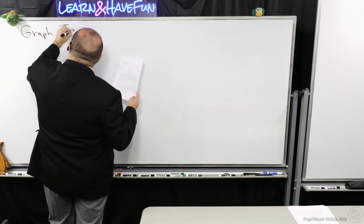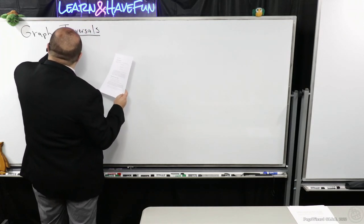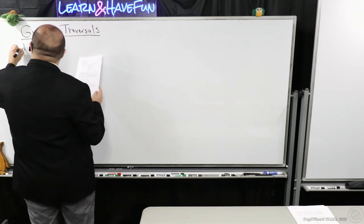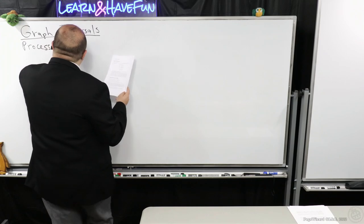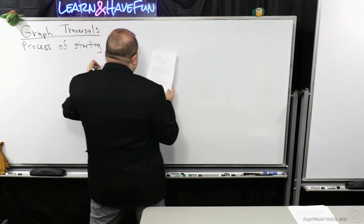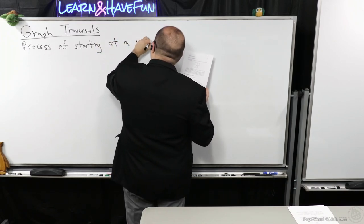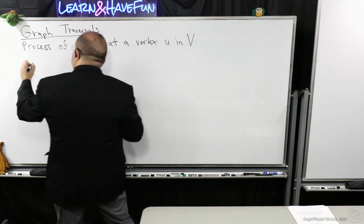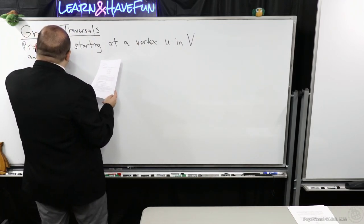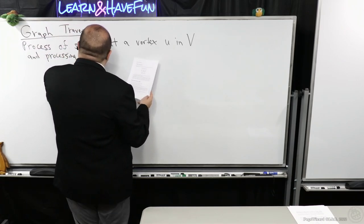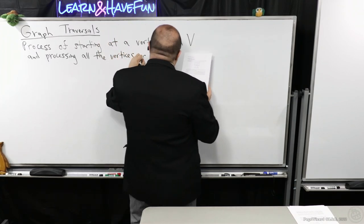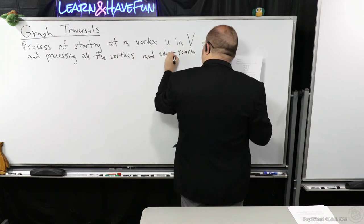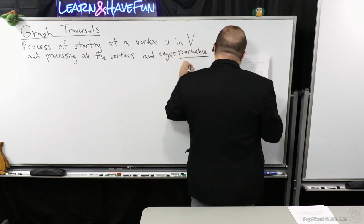So let's talk about what a graph traversal is. I'm going to keep it rather high level, keep it simple. It's simply a process of starting at a vertex U in the set of vertices in the graph and processing all the vertices and edges reachable from U.